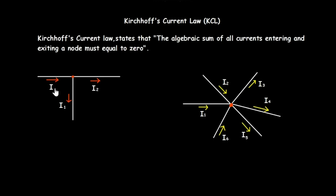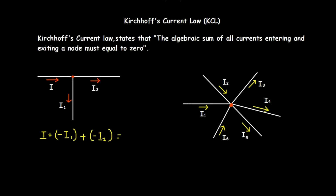Looking at this example: current i is moving towards the node, so it will be positive — that's i. Then i1 is moving away from the node, so that will be minus i1. Considering i2 also, it is moving away from the node, so that is also negative — minus i2. All this will be equal to zero. Opening the bracket, we have i minus i1 minus i2 equal to zero.